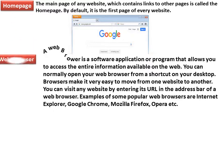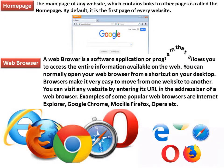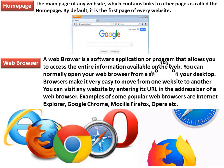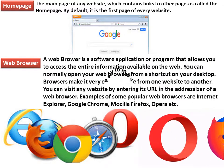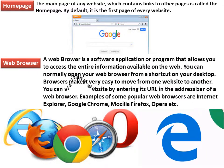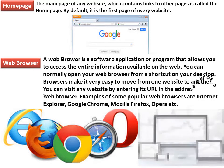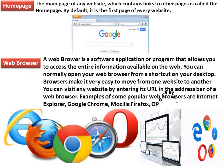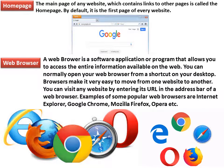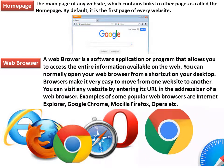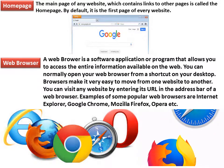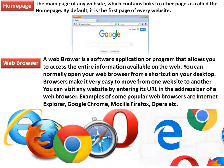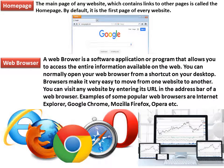Web browser: A web browser is a software application or program that allows you to access the entire information available on the web. You can normally open your web browser from a shortcut on your desktop. Browsers make it very easy to move from one website to another. You can visit any website by entering its URL in the address bar of a web browser. Examples of popular web browsers are Internet Explorer, Google Chrome, Mozilla Firefox, Opera, etc.